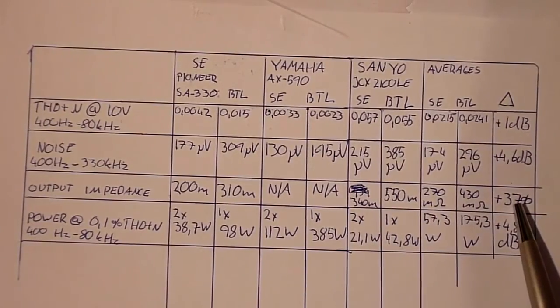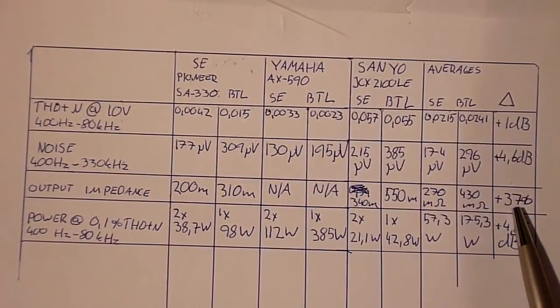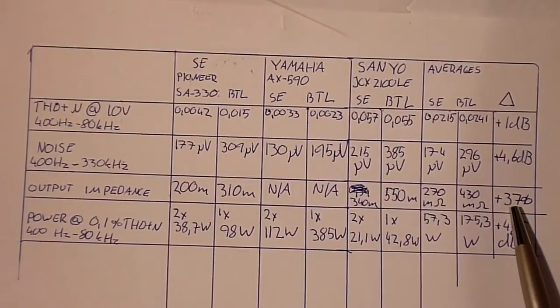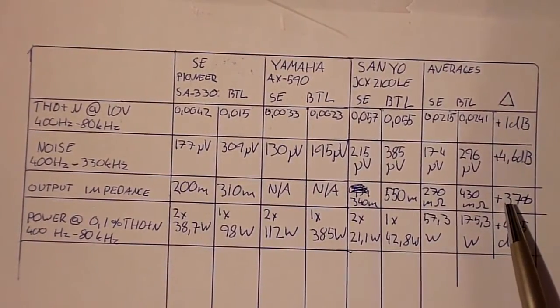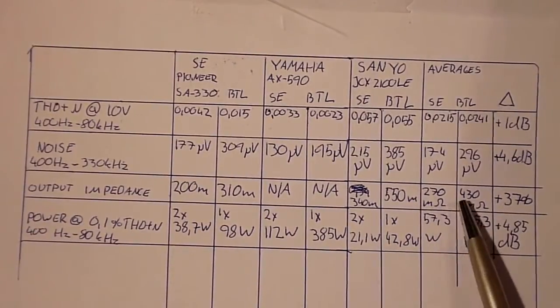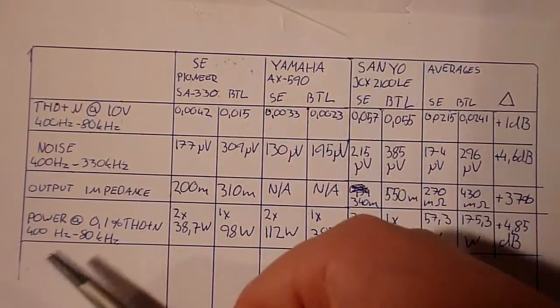So performance in bridge-tied load mode was considerably worse than performance in single-ended mode when it came to output impedance, which makes sense. Moving on.